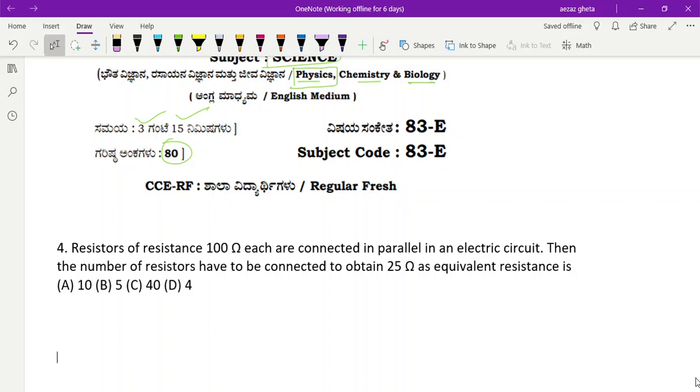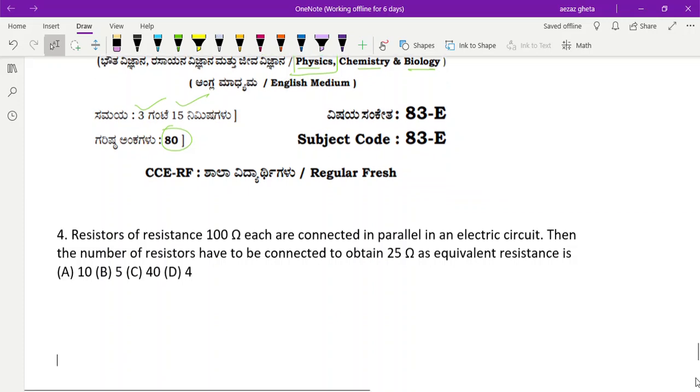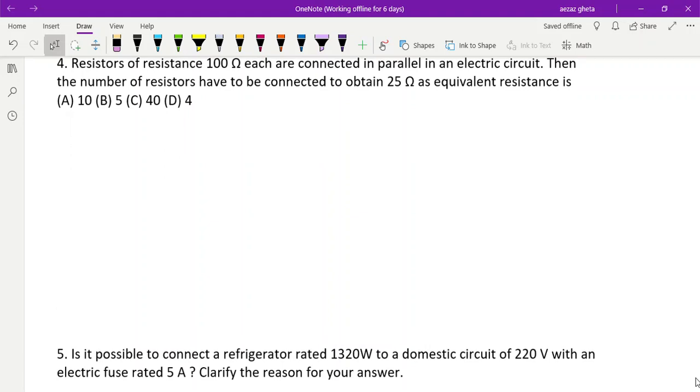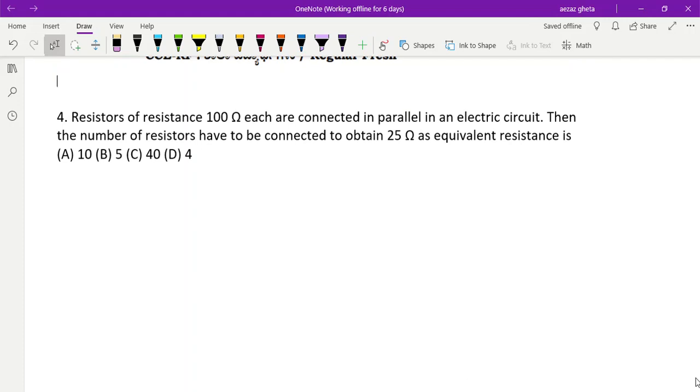Right, but presently we will start with physics. One mark, two mark, whatever questions are numerical type or light chapter like ray diagrams we will see. This was the question numerical part: Resistors of 100 ohm each connected in parallel. In parallel, 1 by total resistance - remember total resistance is less than individual. Then number of resistors we have to connect to obtain 25 ohm as equivalent resistance.